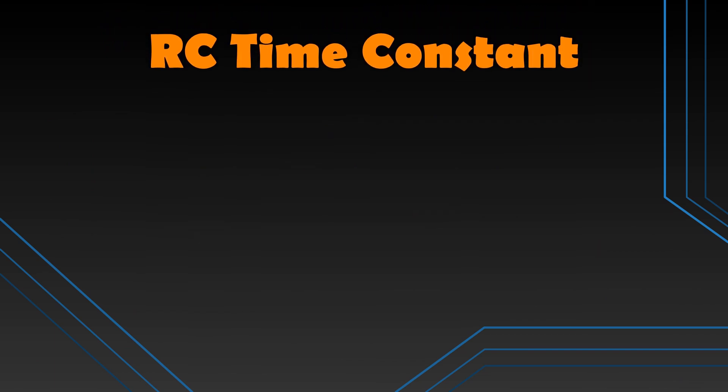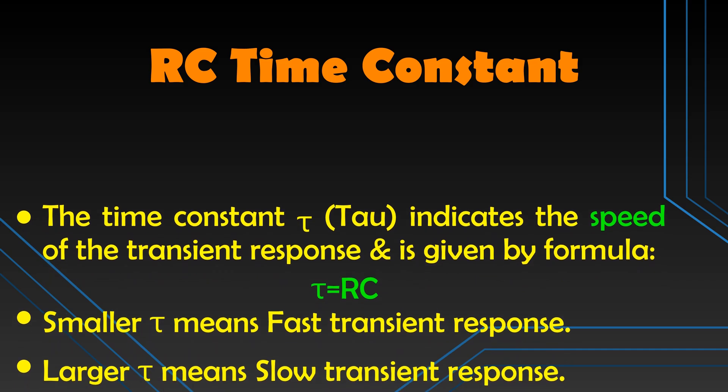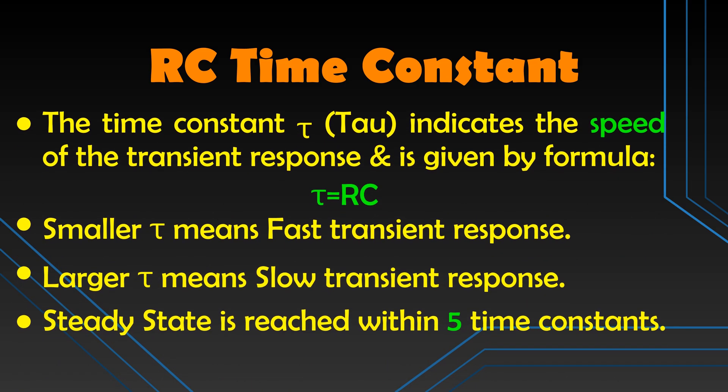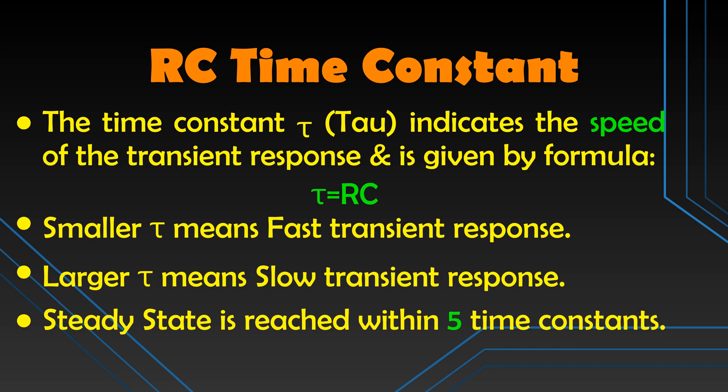Now, what is an RC time constant? The time constant, known as tau, basically indicates the speed of the transient response, measured in seconds, and is given by multiplying the resistance and capacitance used in the circuit. If the circuit has a small time constant, it settles down quickly to a steady-state value showing fast transient response. If the time constant is large, more time is required to reach steady state. In any case, the circuit reaches steady state within 5 time constants — 5 taus.